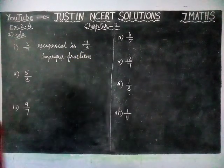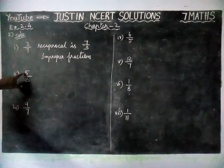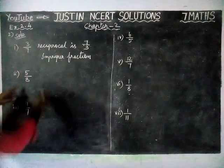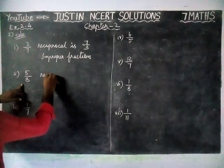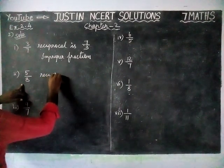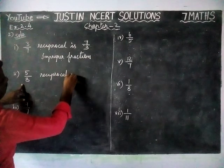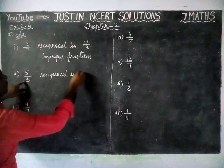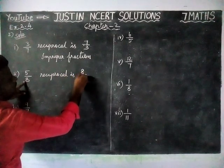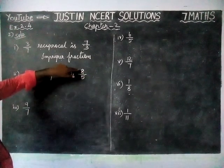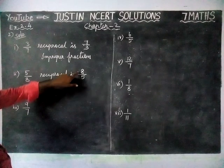Second question: 5 by 8. The reciprocal is 8 by 5, and here also the numerator is greater than the denominator, therefore this is an improper fraction.